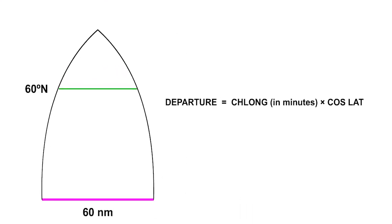Remember, departure is change of longitude in minutes times cosine of latitude. So that at 60 north, for one degree change of longitude, the departure is 60 minutes times the cosine of 60 degrees, which is 0.5. So the departure is 30 nautical miles. The meridians are only 30 nautical miles apart at 60 north.